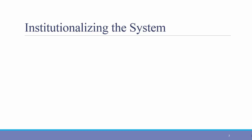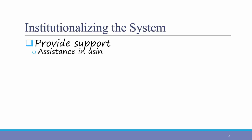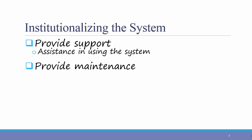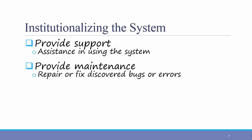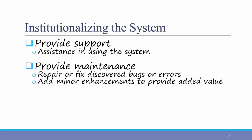There are three key steps in institutionalizing the system. First, providing support, which means assistance in using the system. Second, providing maintenance, which could include repairing or fixing discovered bugs or errors in the system, as well as adding minor enhancements to provide added value.